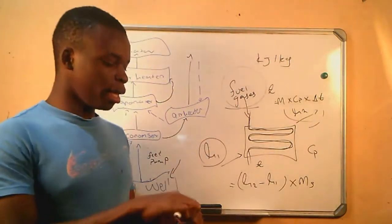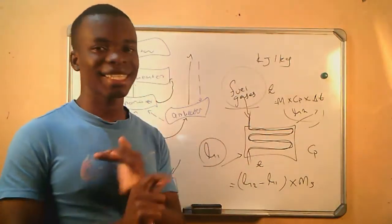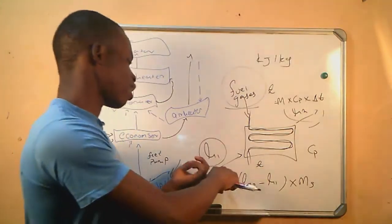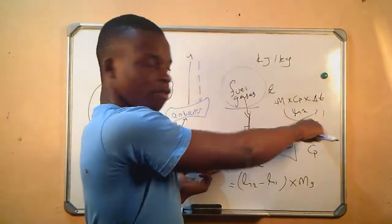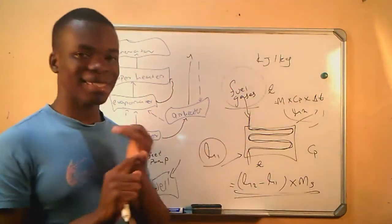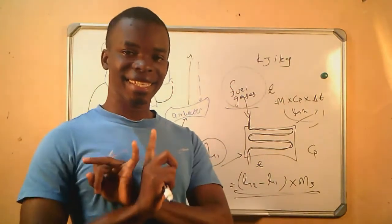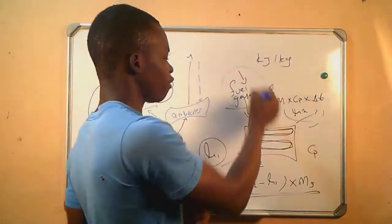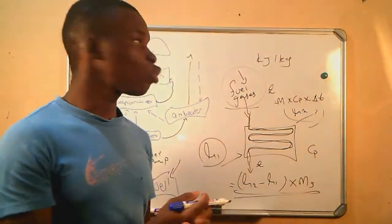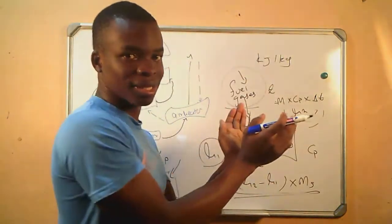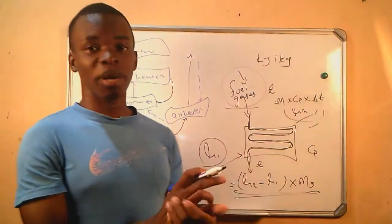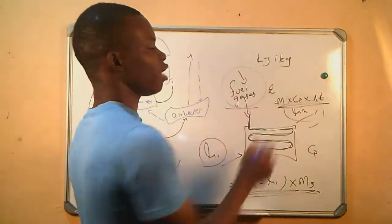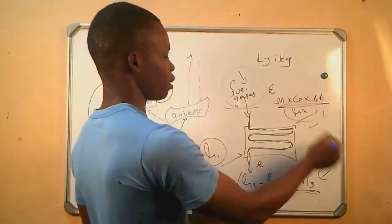Questions might come in two ways. They might ask you to calculate the heat that is gained in the economizer — that refers to the heat gained by the feed water from the economizer. Or they might say calculate the heat that is lost in the economizer — that refers to the heat lost by the fuel gases at the economizer. We know that the heat lost by the fuel gases equals the heat gained by the feed water. Either way, you can use any formula as long as you have the information, but always try to use the enthalpy formula first.